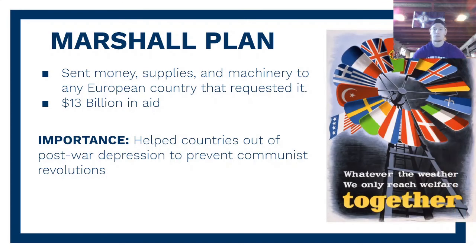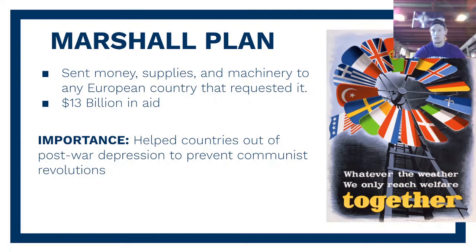A great piece of propaganda comes from the Marshall Plan — a lot of visuals showing all the different countries with the motto 'we only reach welfare together.' The majority of the nations shown are Western European — the Netherlands, Ireland, Sweden, Italy, Denmark, France, United Kingdom, Norway, Germany, Iceland, and others. Turkey stands out as the one major holdout in the East that the United States really clings to, which will come back when we talk about the Cuban Missile Crisis.